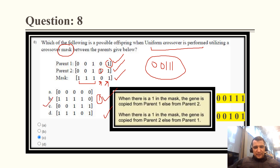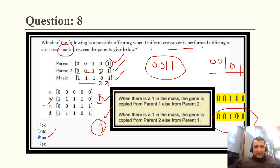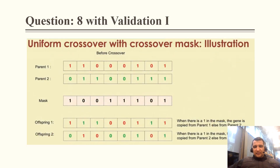If we apply rule two — when there is one in the mask, copy from parent two — we get offspring: 0, 0, 1, 0, 1, but this option is not available. So rule one is followed and the correct answer is C. In uniform crossover, the mask approach and coin tossing are two common methods for determining which parent to copy from.